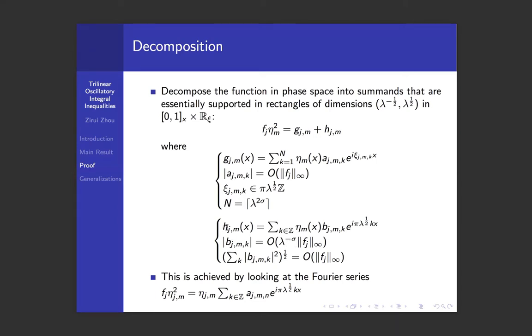And we call these terms h_{jm}. The remaining terms forms the g function. By our choice, all the remaining Fourier coefficients will be bounded below by λ^(-σ). And a trivial upper bound will be L^∞ norm of f_j. And by Parseval's identity, there are at most λ^(2σ) terms in the g_{jm}.